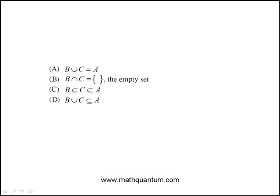Here we're told that A is a non-empty set and both B and C are subsets of A. Question: which of the following statements must be true?